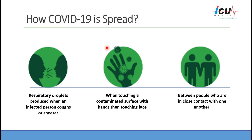How the virus spreads is well known — it is through respiratory droplets. We get these droplets into our mucous membranes when we are enclosed with other people, as those droplets are generated by the infected person through coughs or sneezes. That's why we need to keep a distance from other people so we don't come into close contact with these respiratory droplets.